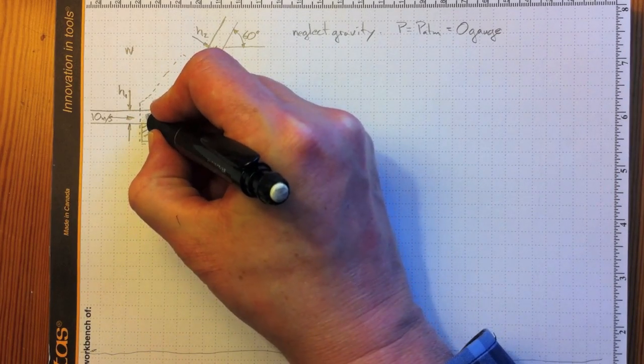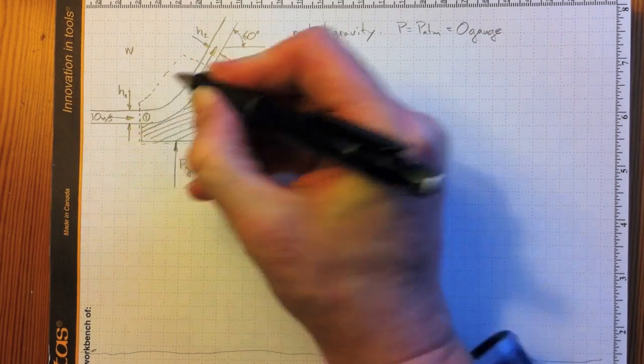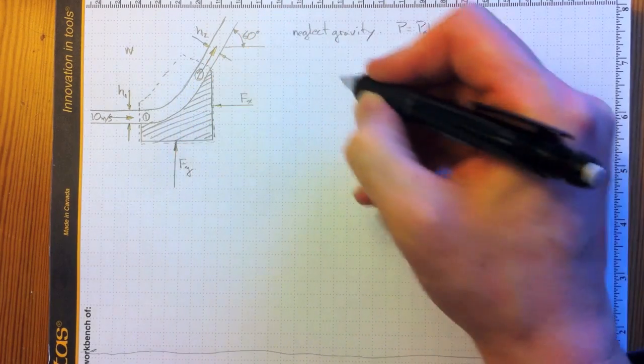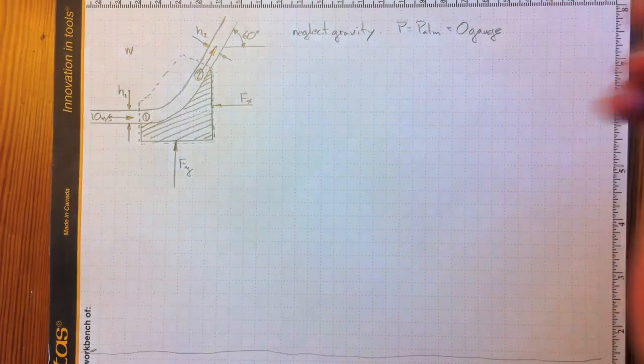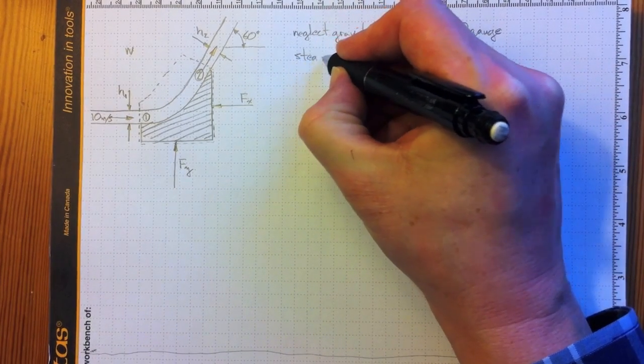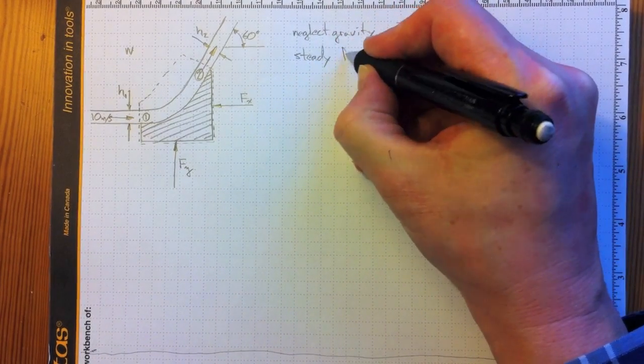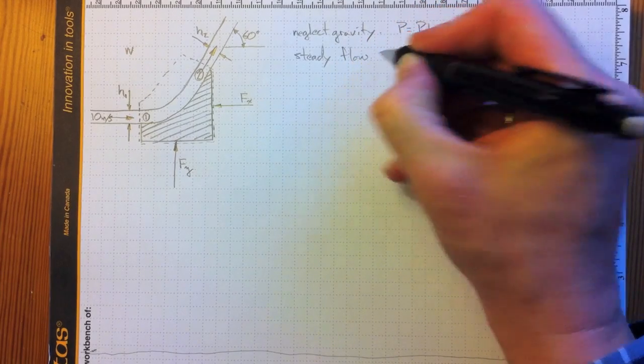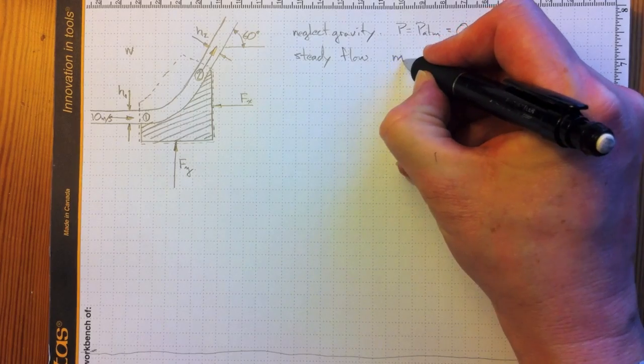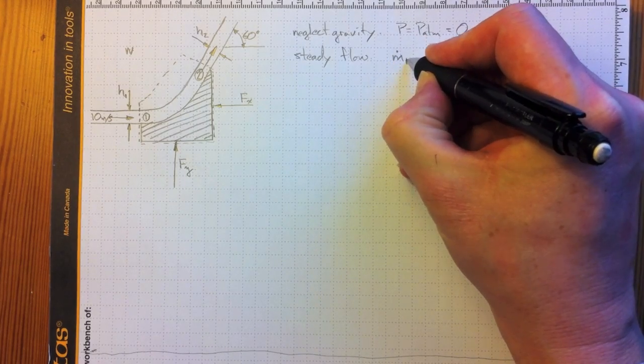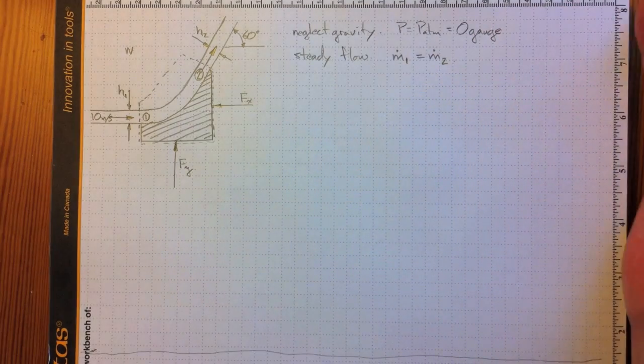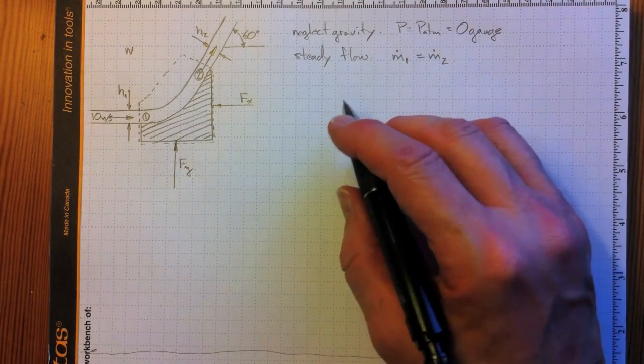I'll call this location 1, where stuff is coming in, and up here, location 2, where stuff is going out. Now what do I know? I know that it's a steady flow. So no storage, no changes inside the control volume. I know then that m.1, the mass flow in at 1, is equal to m.2, the mass flow out at 2.